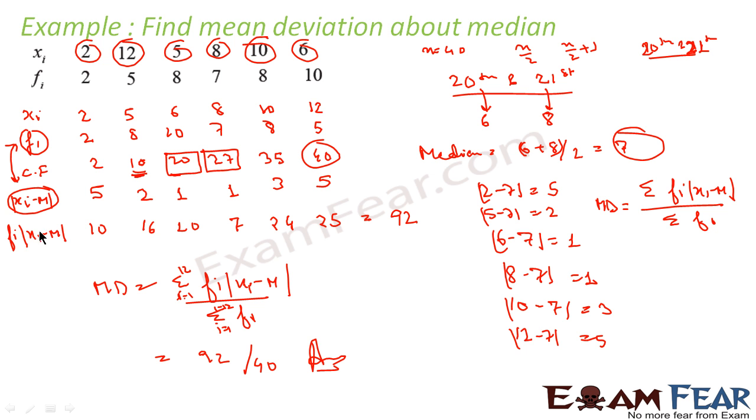The distance came out to be these values: 5, 2, 1, 1, 3, 5. Once we have the distance, we found fi into the distance. We got this. We added this to get 92, and then we used the formula.